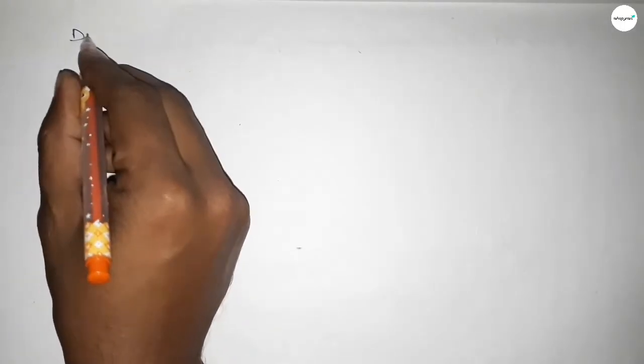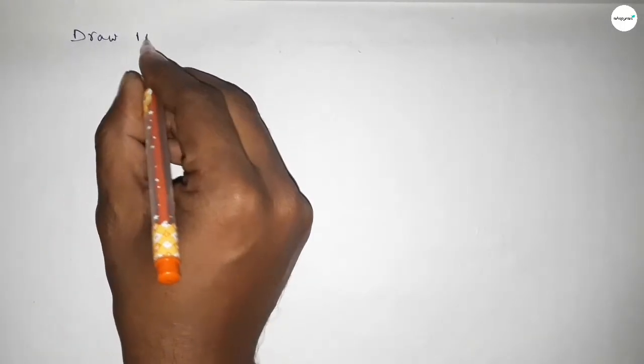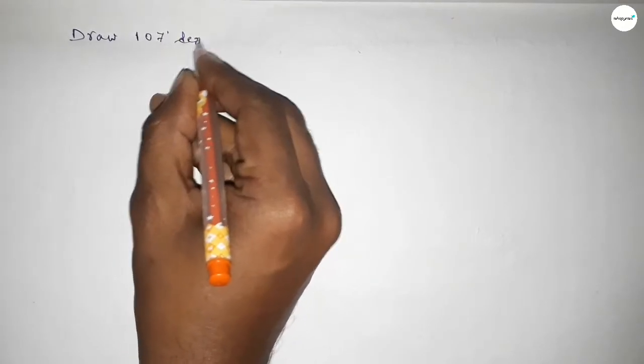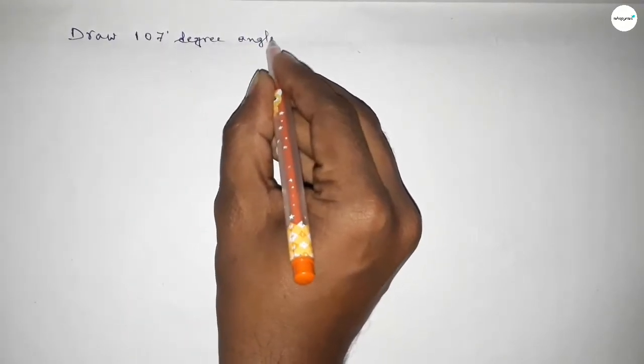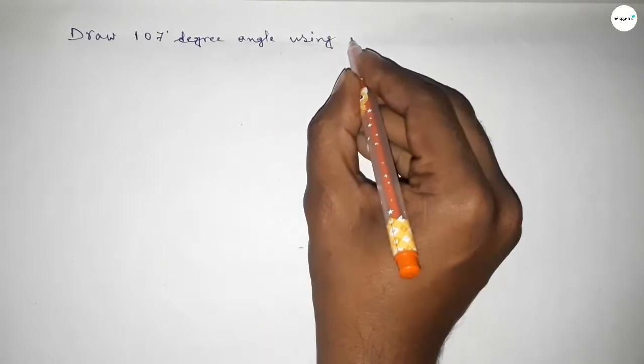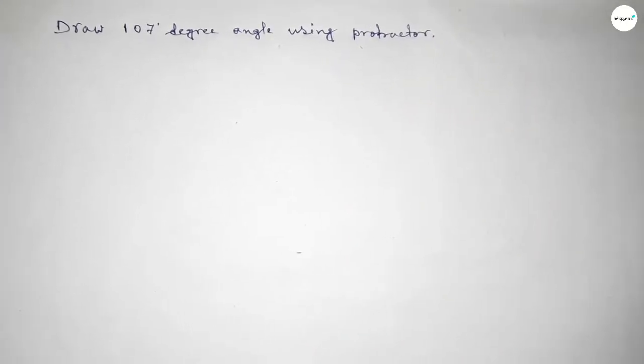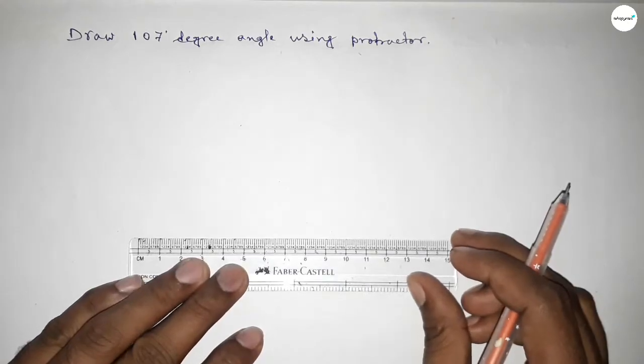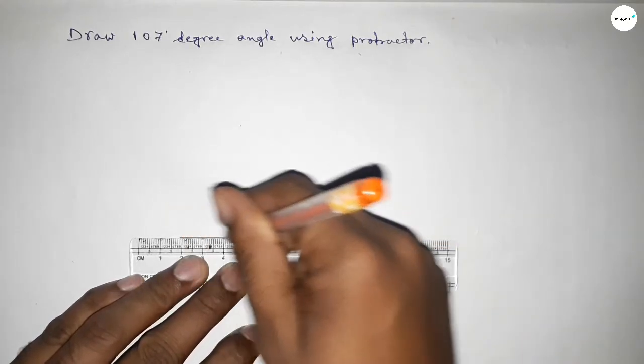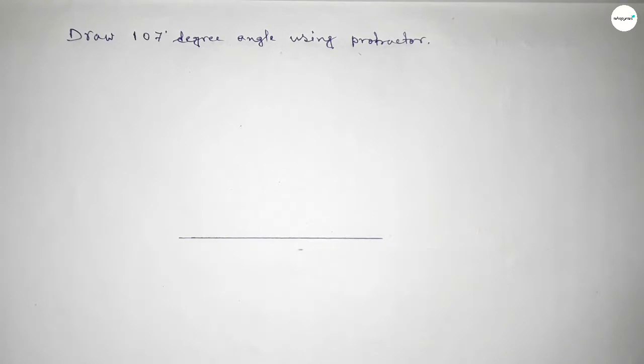Hi everyone, welcome to Essay Share Classes. Today in this video we have to draw a 107-degree angle by using a protractor. So let's start the video. First of all, we have to draw here a straight line of any length.